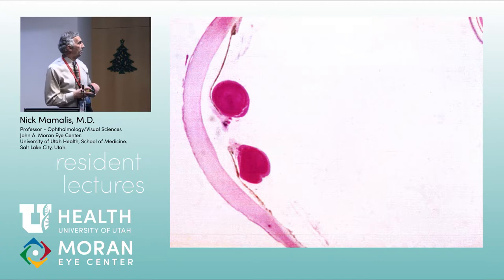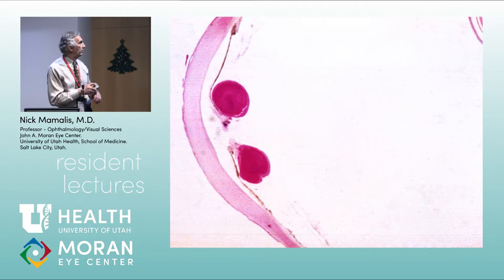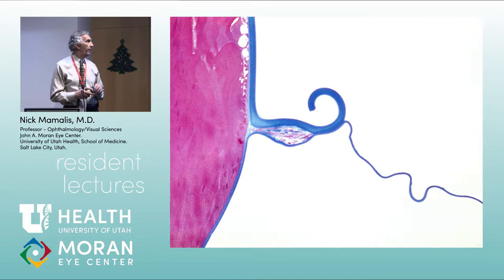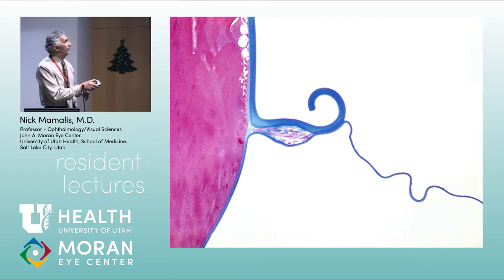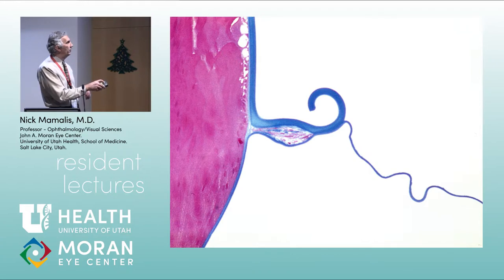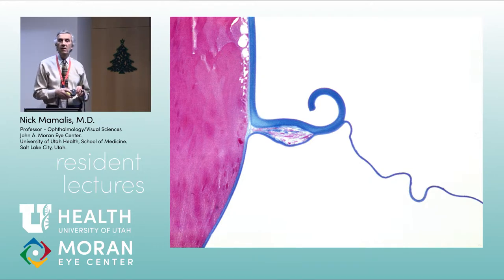Here you can see a Soemmering's ring pathologically from a traumatic cataract. Here's the close-up using trichrome stain: the anterior capsule, the thinner posterior capsule, where they've fused together, and the growth of proliferative cortical material in the periphery. This is what a Soemmering's ring looks like.